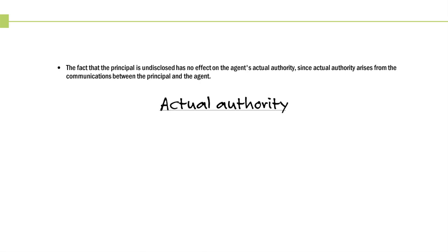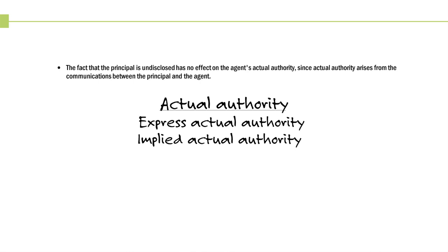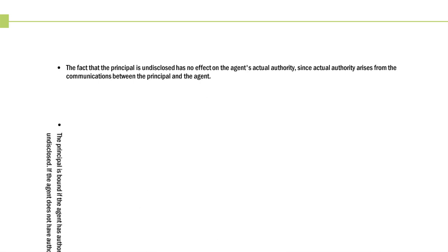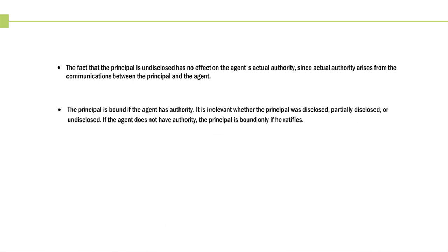Actual authority arises from the communication between the principal and the agent. There's express actual authority — specific oral or written instructions — and implied actual authority to do whatever's necessary to accomplish the goal or objective. The principal is bound if the agent had actual or apparent authority. If the principal's identity is not known to the third party, there's no way the agent can have apparent authority. Apparent authority only exists when the third party reasonably believes the agent is acting on behalf of the principal.